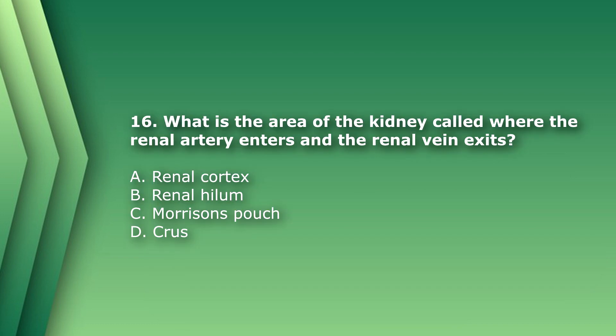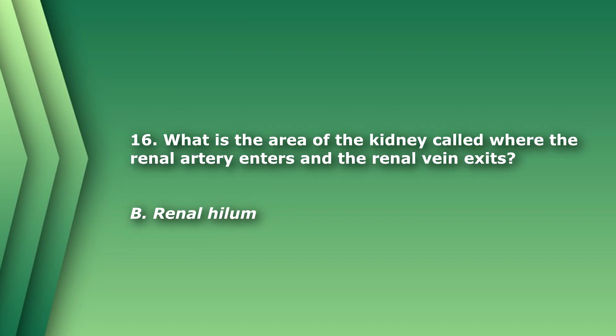Question 17: What is the area of the kidney called where the renal artery enters and the renal vein exits? A) renal cortex, B) renal hilum, C) Morrison's pouch, or D) crux. A hilum is typically where vessels enter an organ, so the answer is B) renal hilum.